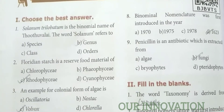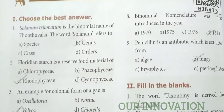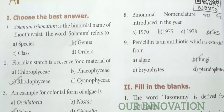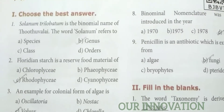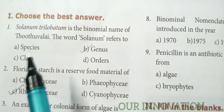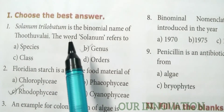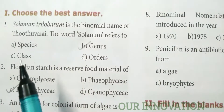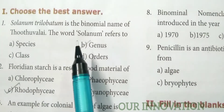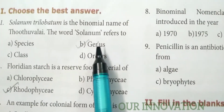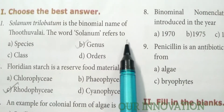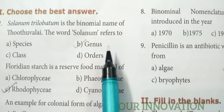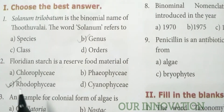Let's move into textbook exercises, page number 202. Choose the correct answer. Solanum trilobatum is the binomial name of Tuduvalai. The word Solanum refers to genus. The answer is genus.